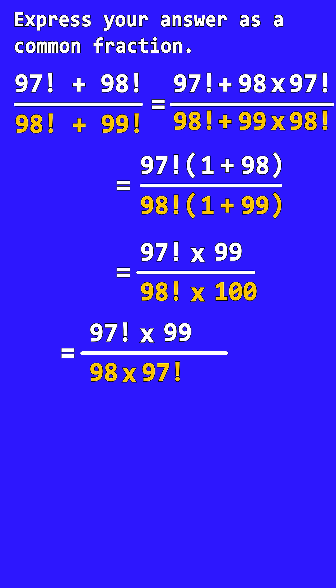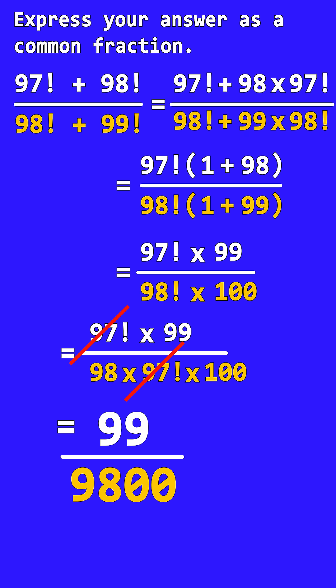So the denominator becomes 98 × 97! × 100. The 97! cancels from numerator and denominator, leaving us with 99 / (98 × 100), which is 99/9800.